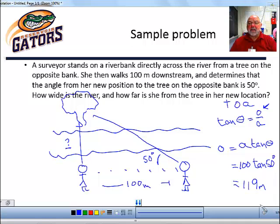Next, we want to find how far is she from the tree in her new location. We can go about this two ways. Now that we know the adjacent side and we have the opposite side we could use the Pythagorean theorem to find the hypotenuse. And that would be the hypotenuse is equal to the square root of the adjacent side squared plus the opposite side squared.